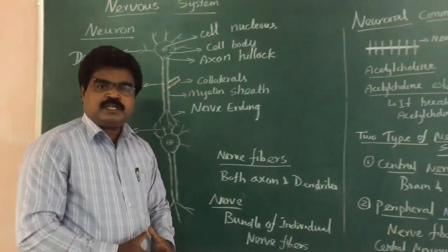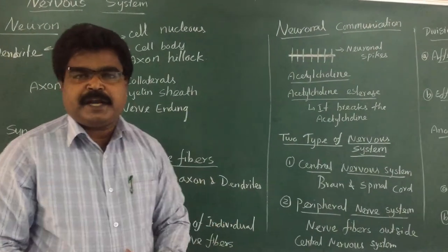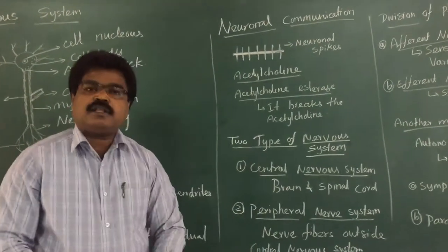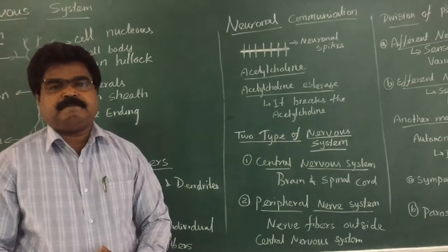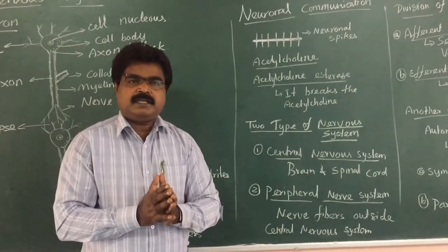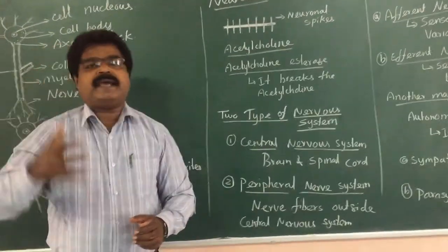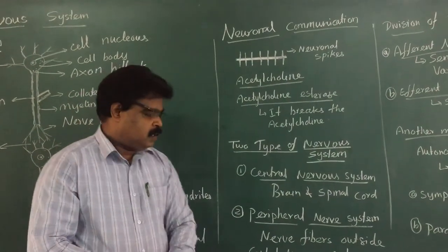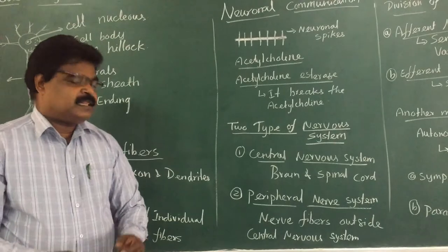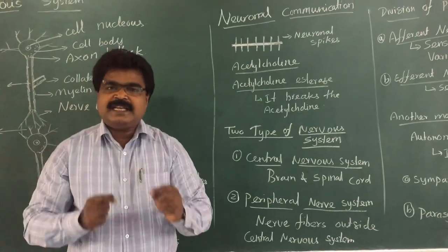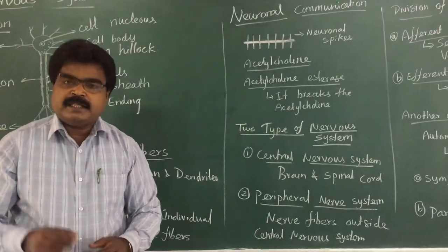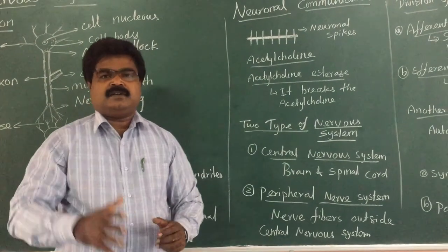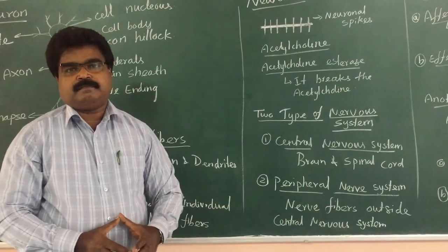The nervous system is broadly classified into two types: one is called the Central Nervous System and the other is called the Peripheral Nervous System. The Central Nervous System means the brain and the spinal cord. The Peripheral Nervous System means nerve fibers outside the central nervous system — that is, nerve fibers other than the brain and spinal cord.